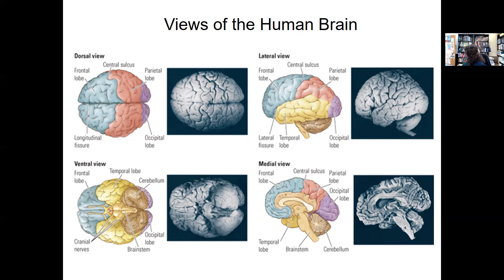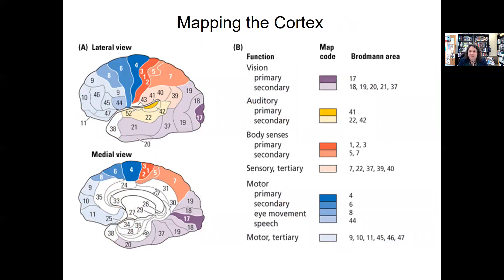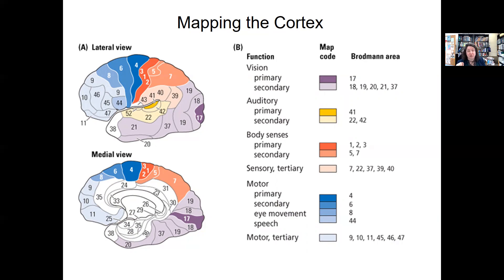The final lobe is at the back — the occipital lobe — and it focuses on visual functions. Your textbook talks a lot about primary, secondary, and tertiary areas. Primary areas receive projections from structures outside the cortex and send projections to it. Secondary areas are adjacent and get input from the primary areas — they interpret sensory input or organize movement. Tertiary areas, sometimes called the association cortex, are between the secondary areas and mediate complex activities.